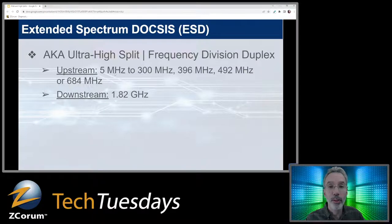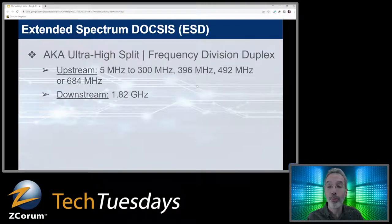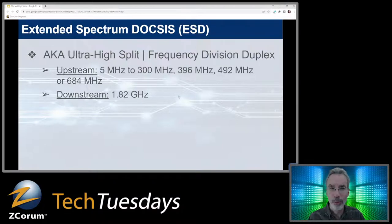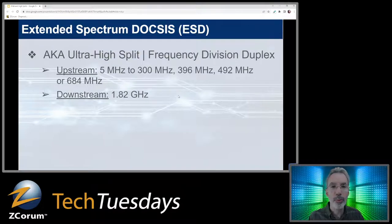With Extended Spectrum DOCSIS, you've got upstream from 5 MHz up to 300, 396, 492, or 684 MHz — in 96 MHz increments — giving you a lot more bandwidth on the upstream. Then the downstream can go up to 1.82 GHz, and they're talking about going even further than that.